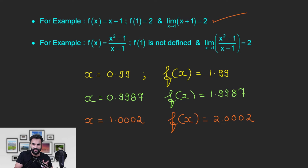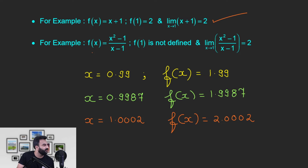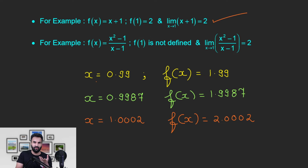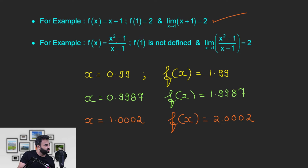चलिए एक और example: f(x) = (x² - 1) / (x - 1)। अब इस पर कोई पूछे कि f(1) की value क्या है — defined ही नहीं है। ऊपर 0 बन रहा है, नीचे 0 बन रहा है — 0 upon 0 is not defined। यहाँ पर 1 पर यह perfect 0, exact 0 बन रहा है, it is not approaching to 0. So this is 0/0 — not defined, there is no doubt in that case।